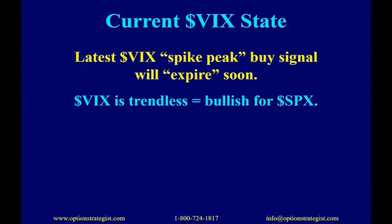Right now VIX is trendless, bouncing around 12 to 14. That's bullish for the market — stocks can easily rally while VIX is trendless. On TV they'll keep saying VIX is so low, but VIX gets low and stays there for a long time. Going back in charts you'll see it went much lower than this for much longer. VIX below 14 is not a problem — it just means VIX is trendless and stocks can rise. Overall the VIX chart is bullish for stocks.